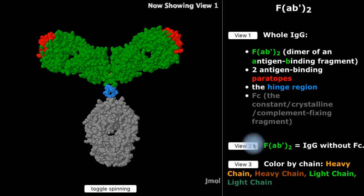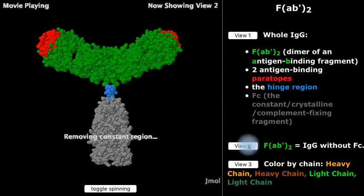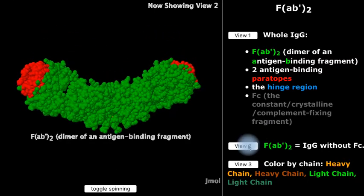Now we'll hide the constant region and the hinge, leaving the FAB'2 fragment.